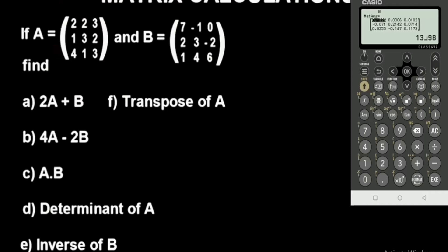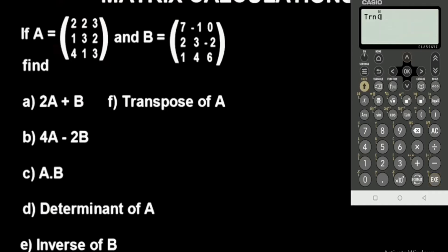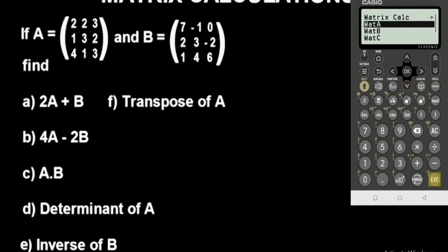Lastly, for the transpose matrix, go to catalog, matrix option, then matrix calculations, and navigate to transpose. Note: if you need the identity matrix, use that option instead. For transpose, press execute, select Mat A, go to catalog, matrix option, select Mat A, close the brackets, and press execute. This gives you the transpose of this matrix.